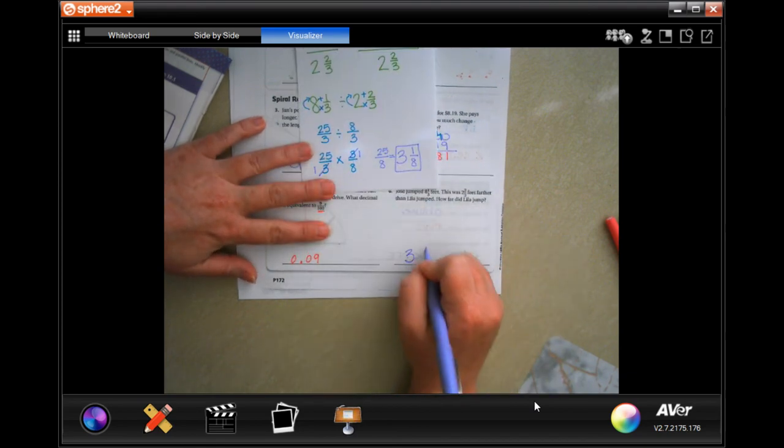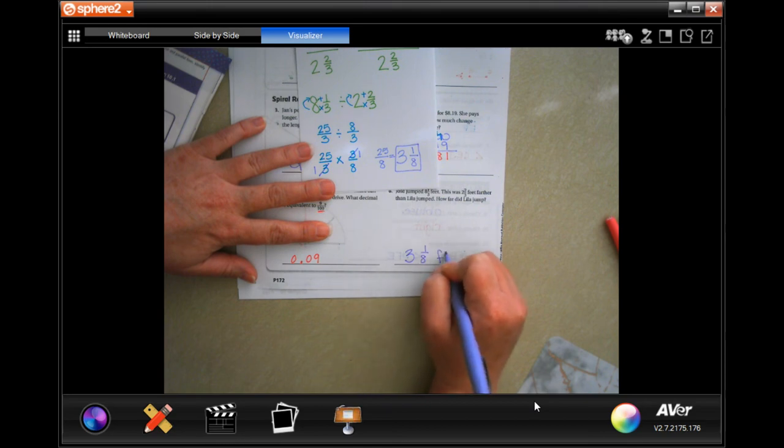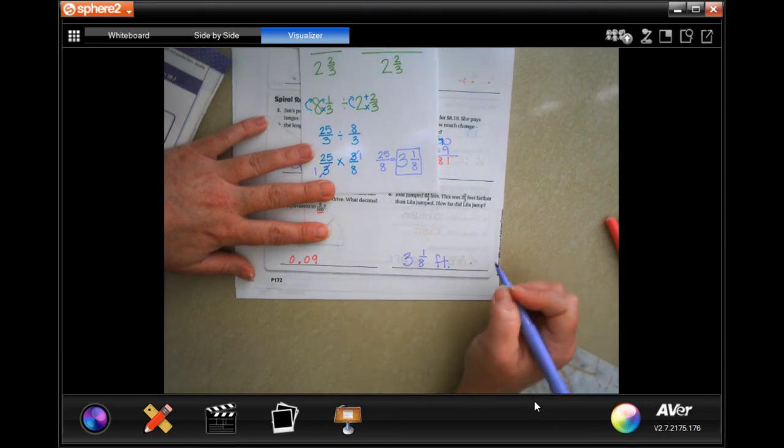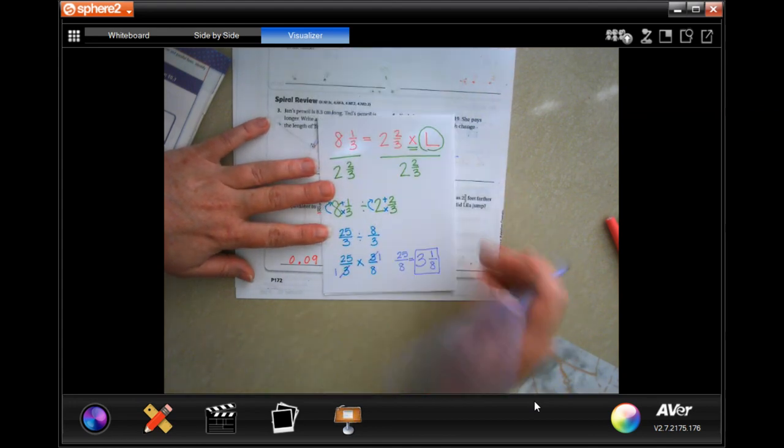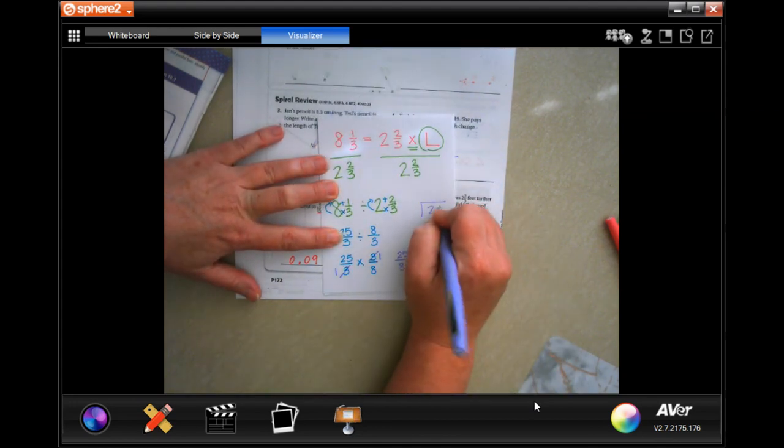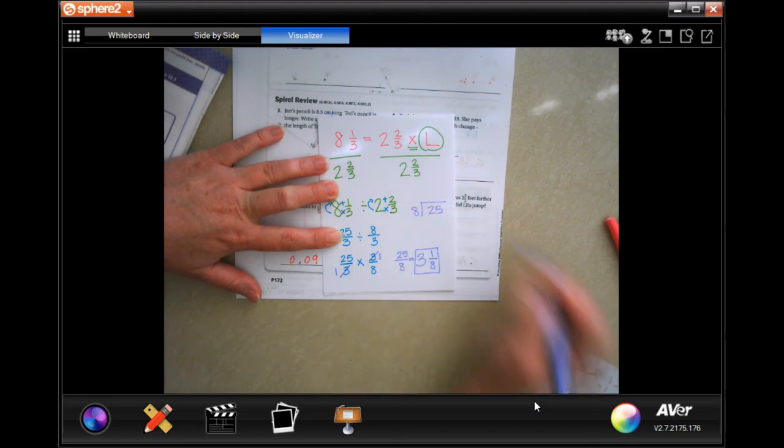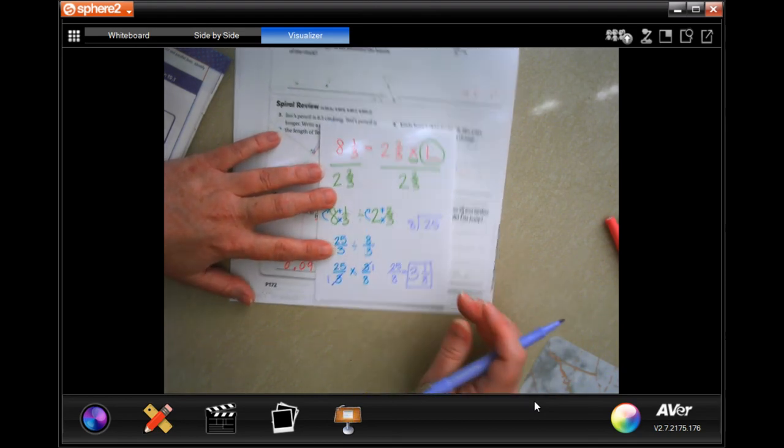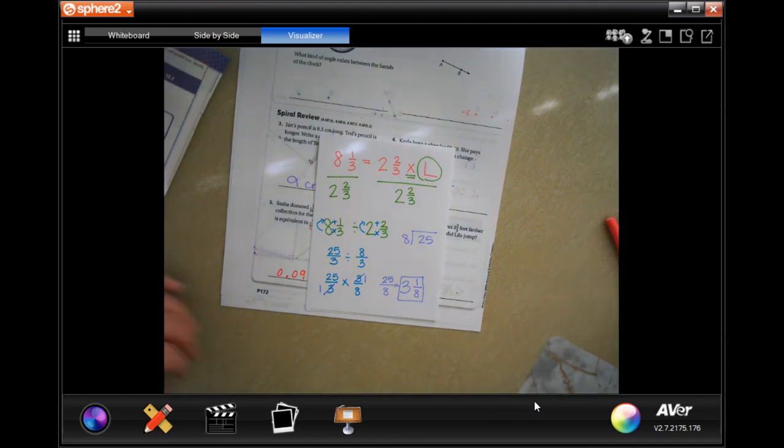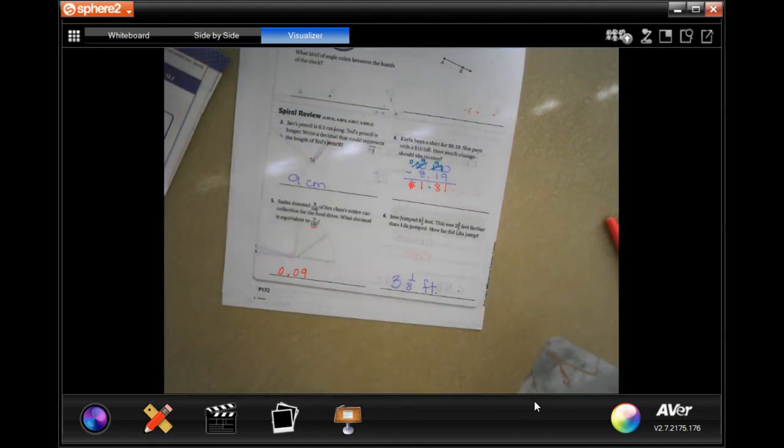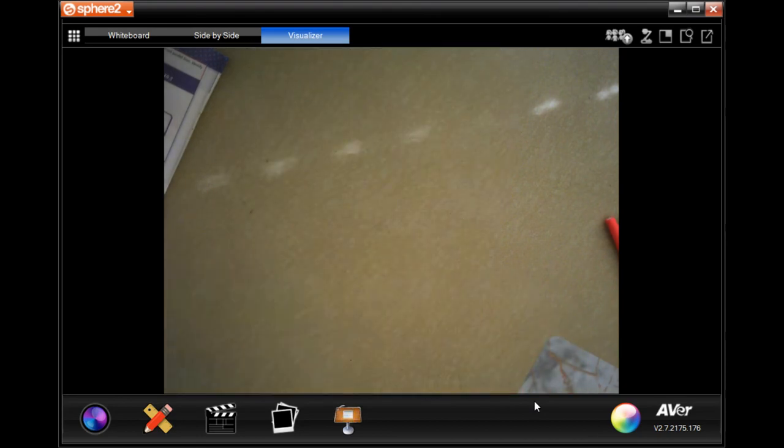3 and 1/8. If you need to do the 25 divided by 8 and do your division that way, you totally can. Nothing wrong with that. Thanks for hanging out for 10.1. Come on back for 10.2. Stay tuned.